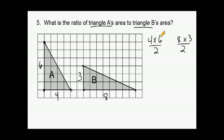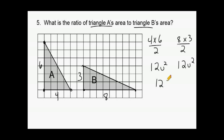Four times six is 24, and dividing that in half gives us an area of 12 square units for triangle A. For triangle B, eight times three is also 24, and 24 divided by two also yields 12 square units. So the ratio of triangle A's area to triangle B's area is 12 to 12, which simplifies to 1 to 1. Whenever you have identical numbers in your ratio, it will always simplify to 1 to 1.